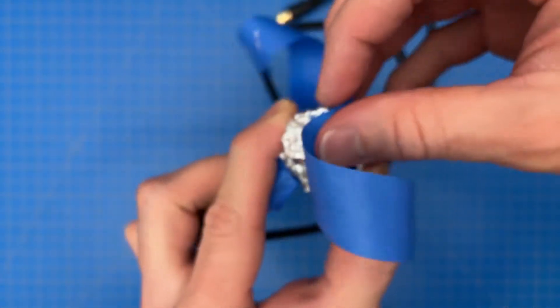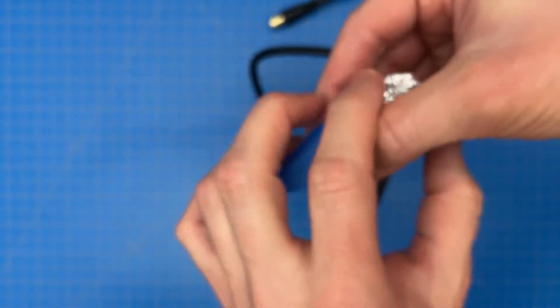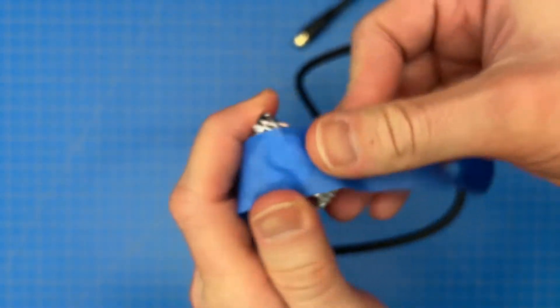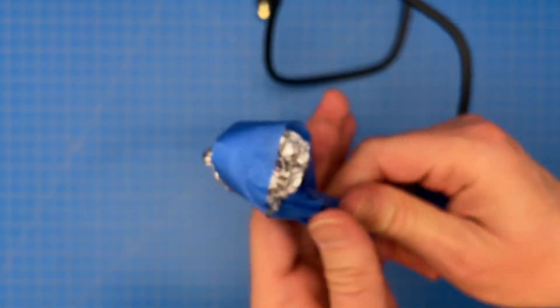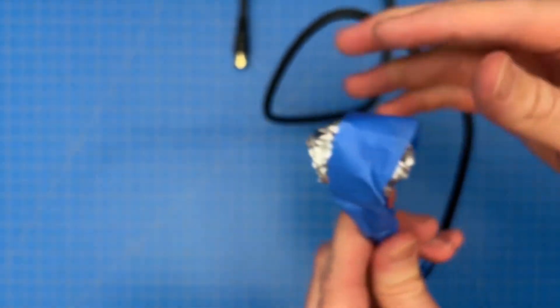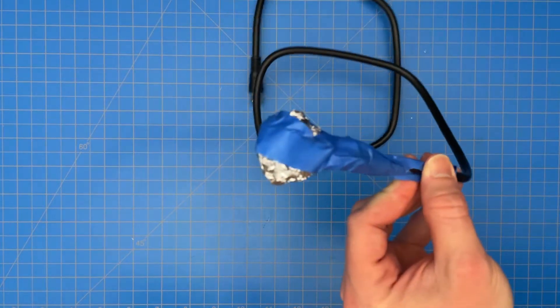The final step here is simply to grab your longer piece of tape and secure the tin foil to the end of the cable. It's pretty ugly, but that should do the trick. Now let's test it out.